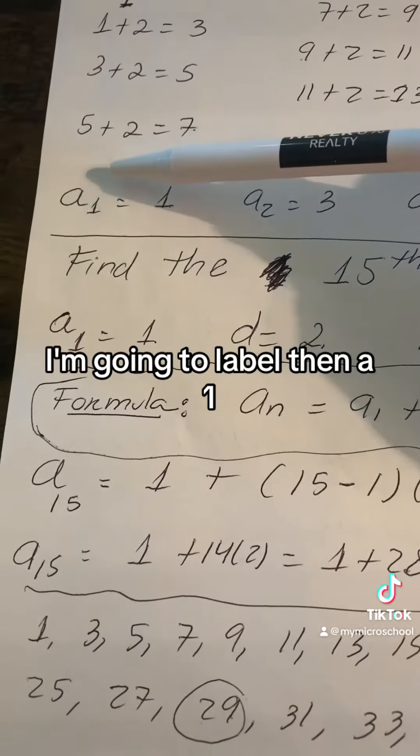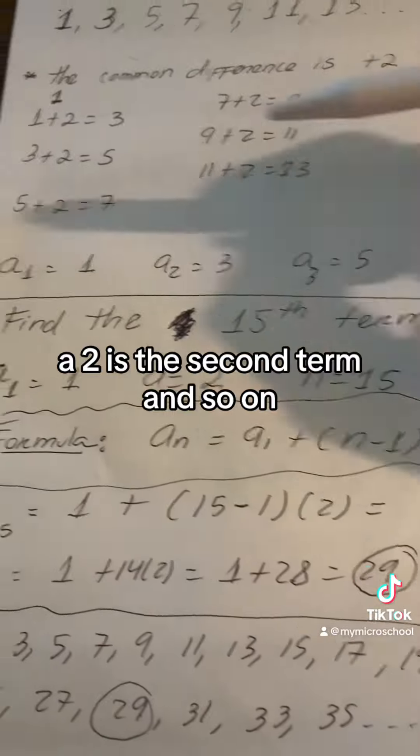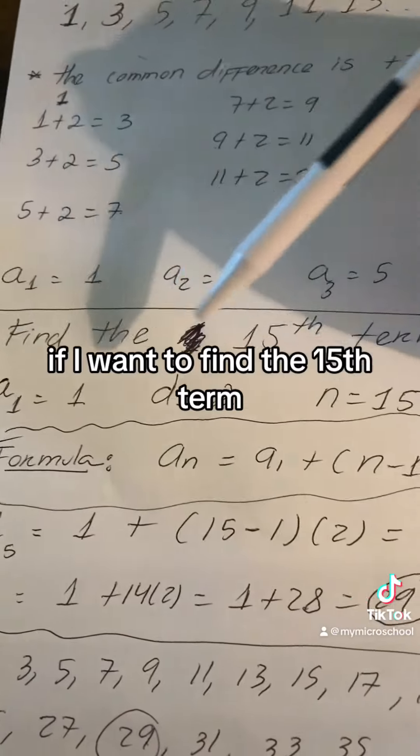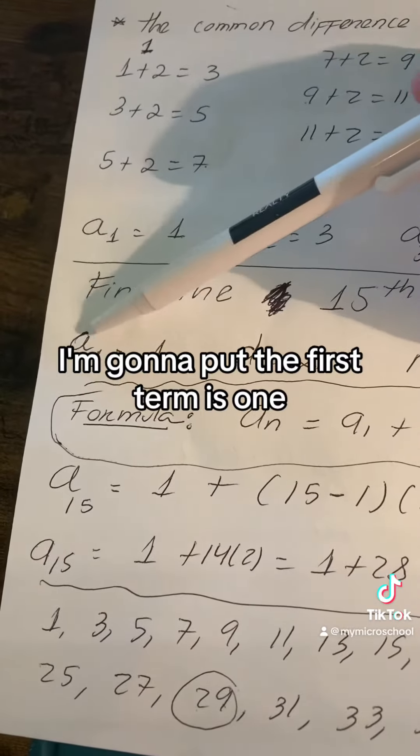I'm going to label then a₁, that's the first term, a₂ is the second term, and so on. Then from there, if I want to find the 15th term, look what I'm going to do. I'm going to put the first term is 1.